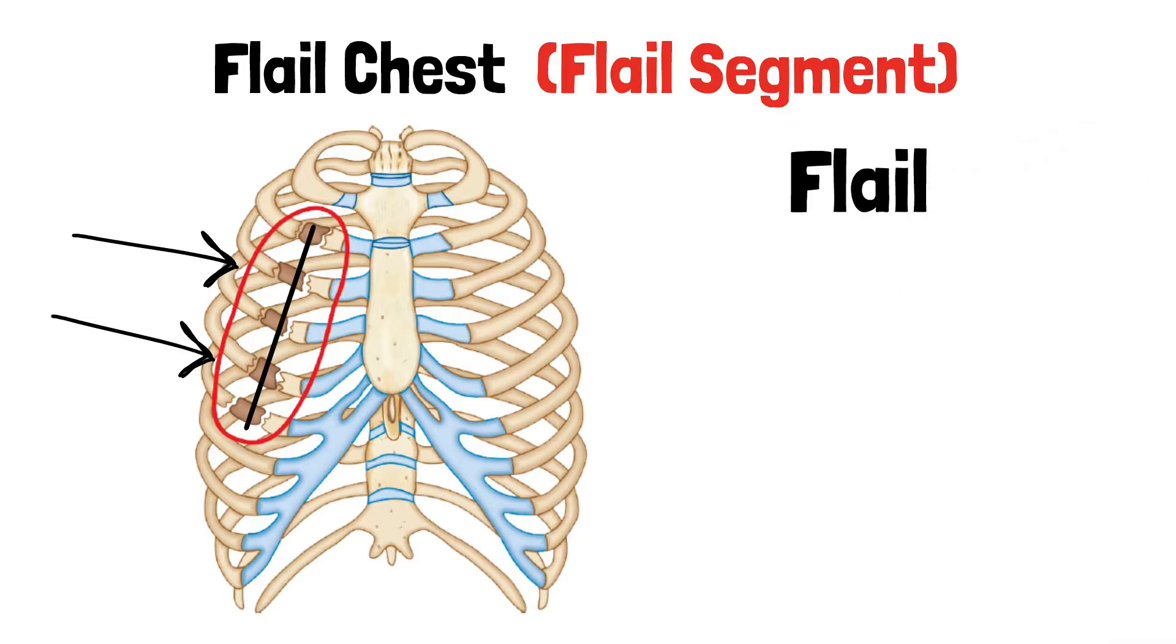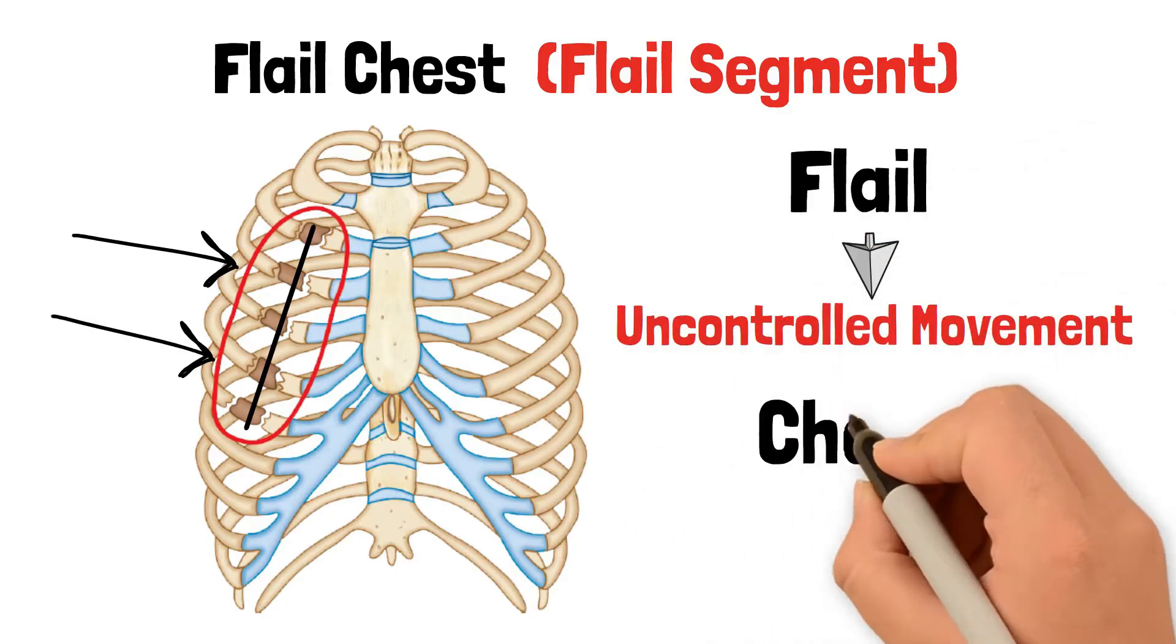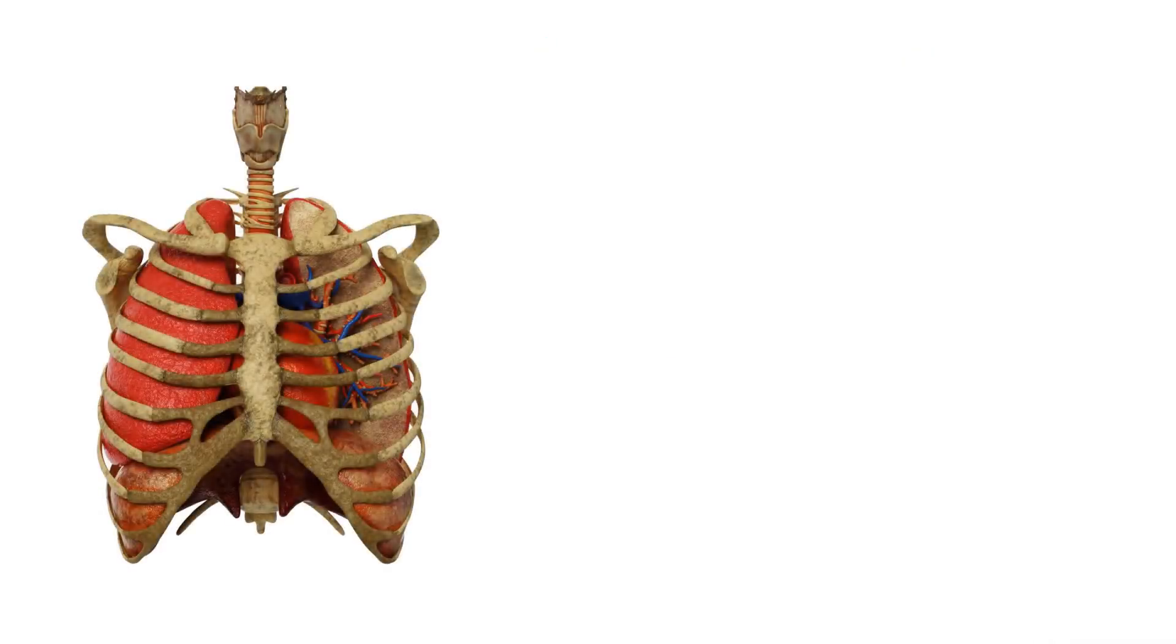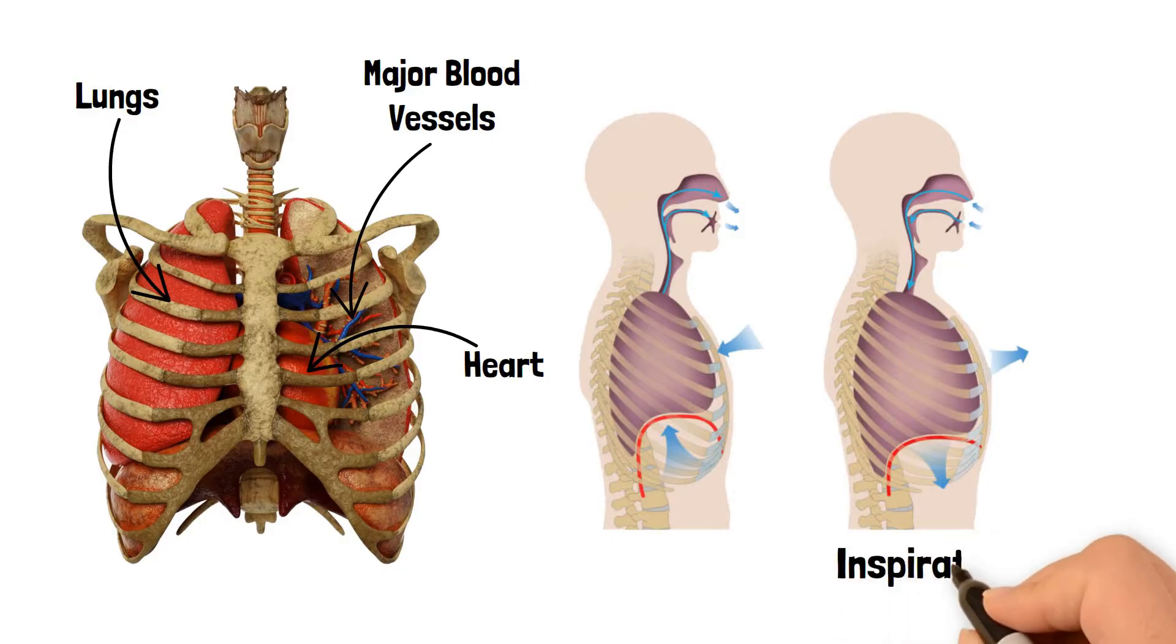The word flail refers to uncontrolled movement, while chest refers to the thoracic cavity. The rib cage protects vital organs such as the lungs, heart, and major blood vessels, and assists in breathing by expanding and contracting with inspiration and expiration.